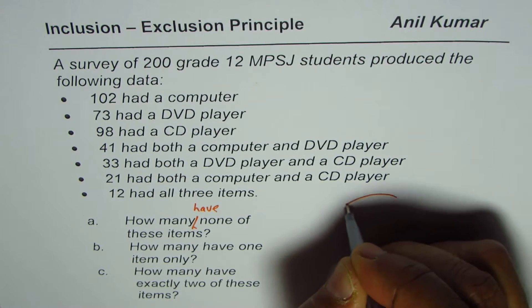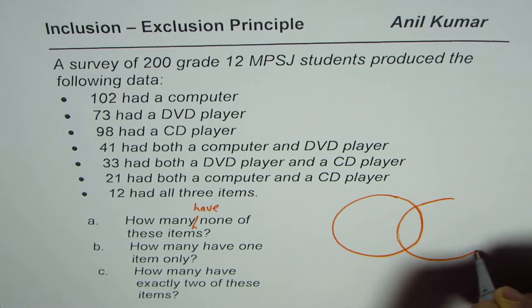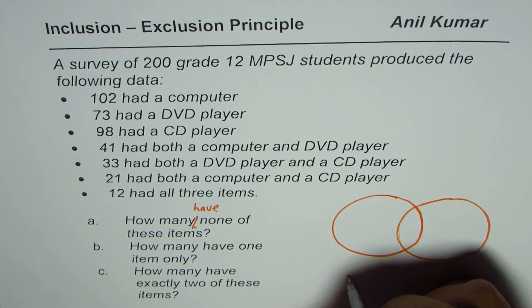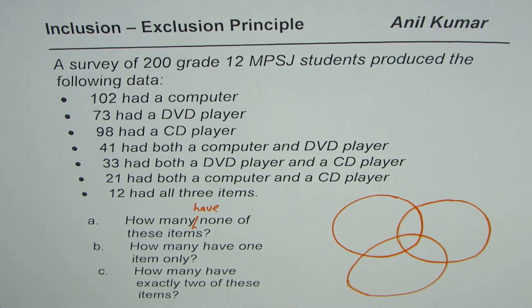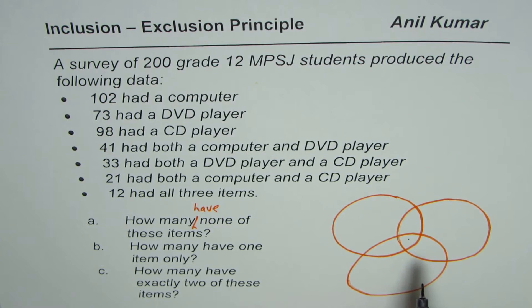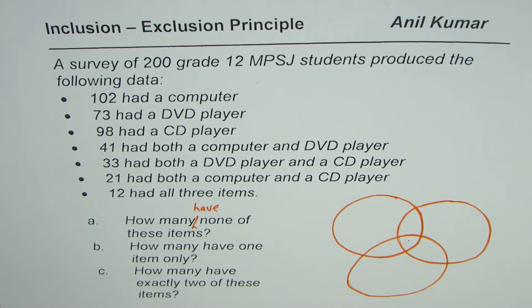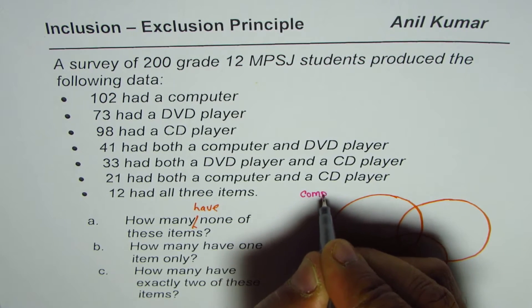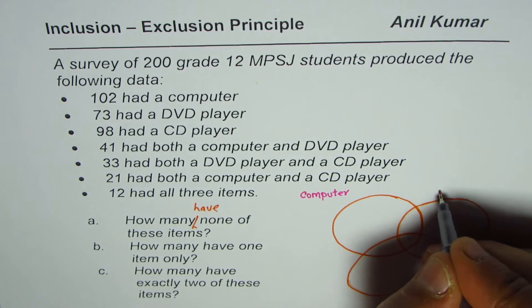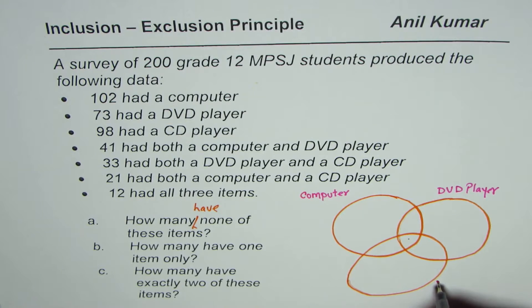Let me draw three overlapping circles — one for each item. I'll label them: this circle for computer, this one for DVD player, and this one for CD player. Now, how do we fill in the information? The best way is to start from the centermost region, which is common to all three sets.